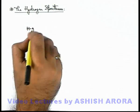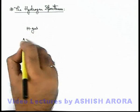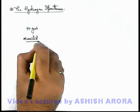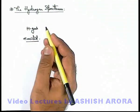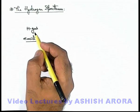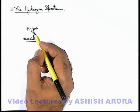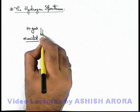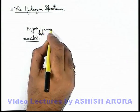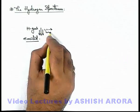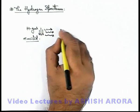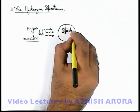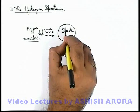When hydrogen gas is excited to higher energy levels, and when electrons from a higher energy level drop back to lower energy levels in various steps, the radiation emitted by the hydrogen gas is passed through a device which is called a spectrometer.